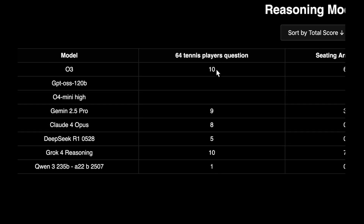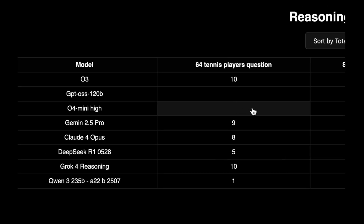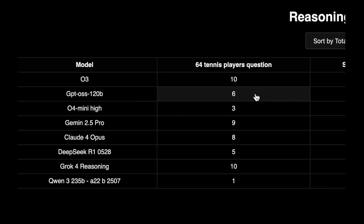We try each question a total of 10 times and note down how many times the model gets it right. O3 and Grok 4 got it right every single time — 10 out of 10. O4 mini high scored just 3 out of 10, showing how difficult this question is for small efficient reasoning models. GPT OSS scored 6 out of 10 — absolutely insane.